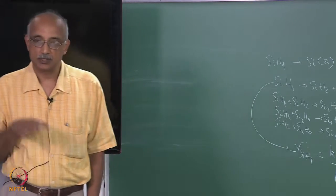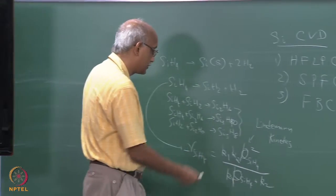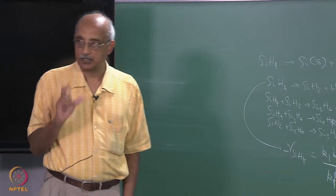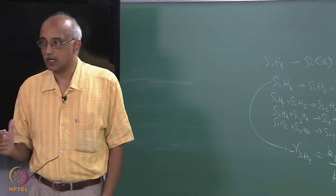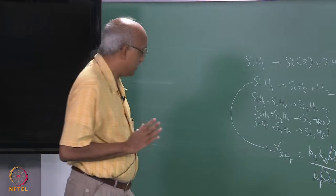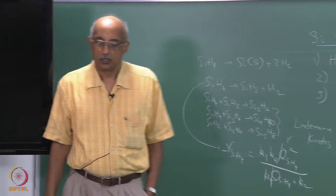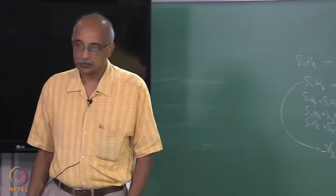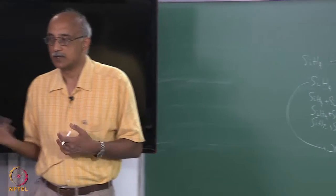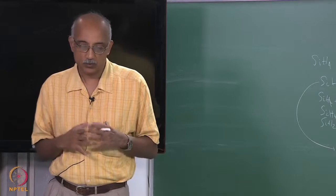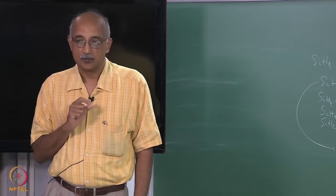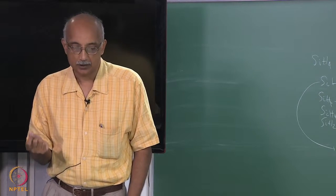In Lindemann kinetics, when system pressure is close to atmospheric, K1·P_SiH4 becomes much larger than K2, so these two terms cancel and the reaction behaves as first order: rate ≈ K1·P_SiH4. However, as you lower the pressure using LPCVD, K2 becomes dominant, making it a second order reaction. So depending on the prevailing pressure, the reaction can run as either first or second order. Describing the chemical kinetics of each reaction individually, with its own rate law and measured constants, is essentially a lifetime research process.